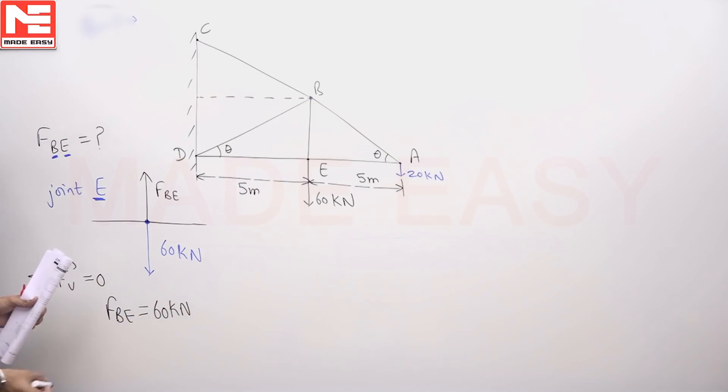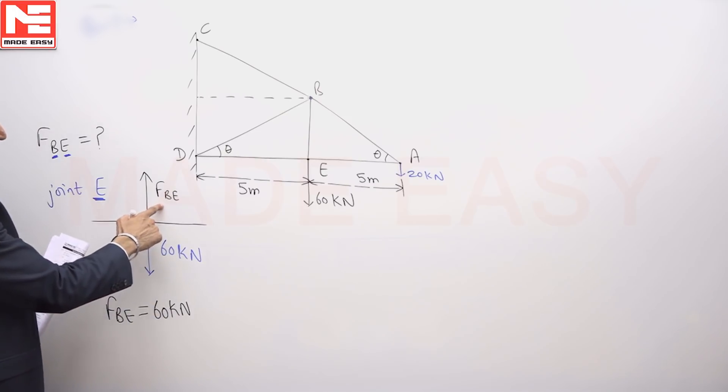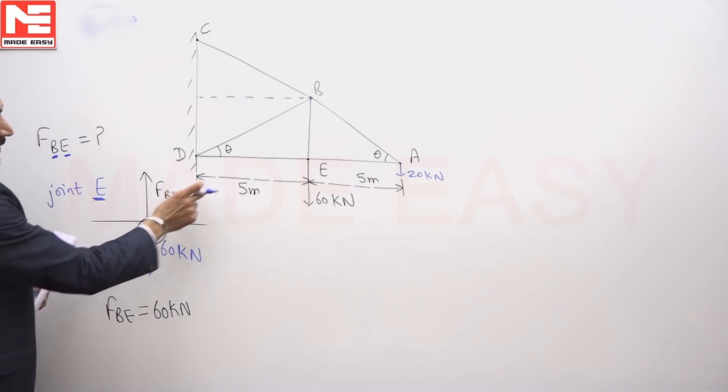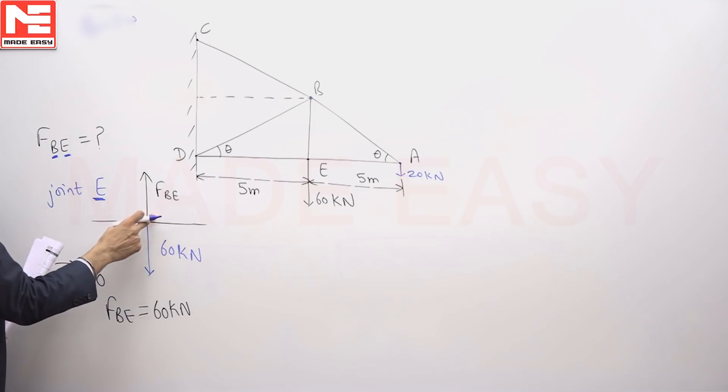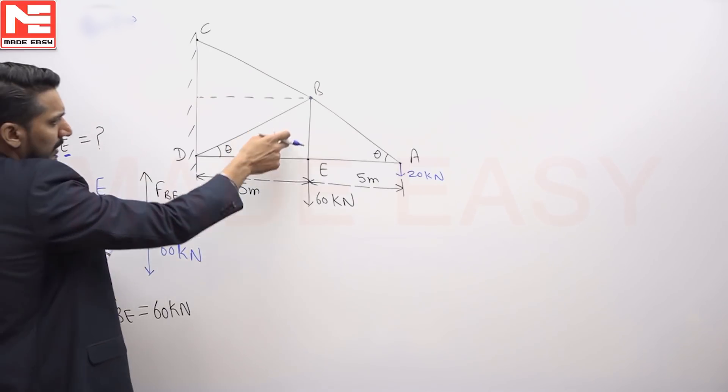I hope you all can see that this particular force, force in member BE. This member has exerted pulling force on the joint. So by Newton's third law, this pin or joint will exert the pulling force on the member BE.